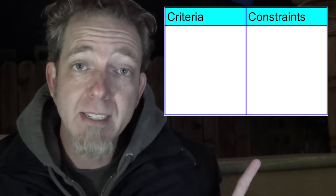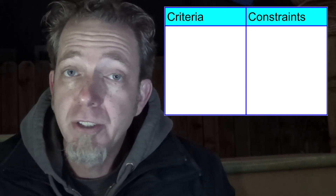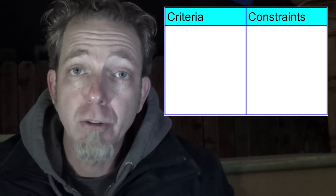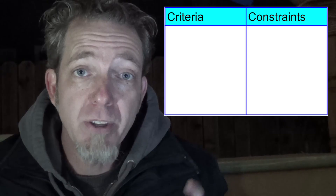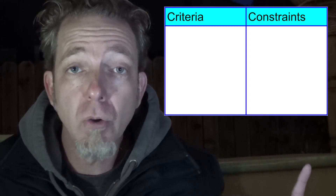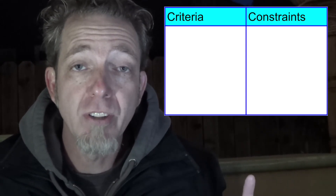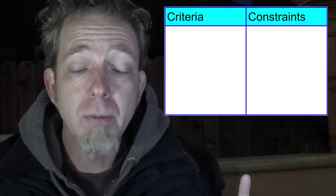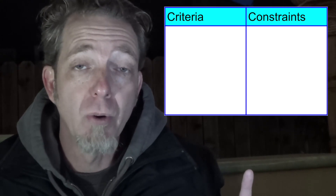Try it for yourself. Create a table that looks like this and look at your design project, your engineering challenge, or your classroom assignment. Identify what your criteria are — those are your goals, your measurement of success. And identify your constraints — what are your limitations, what are the things you can't do, or the things your solution must do? Good luck and happy engineering.